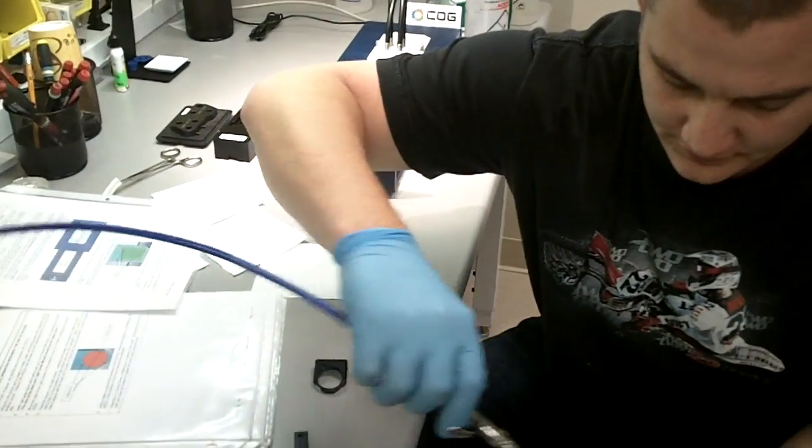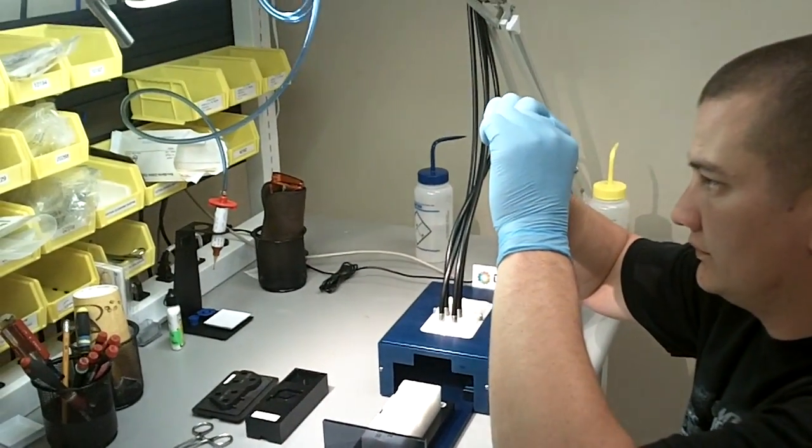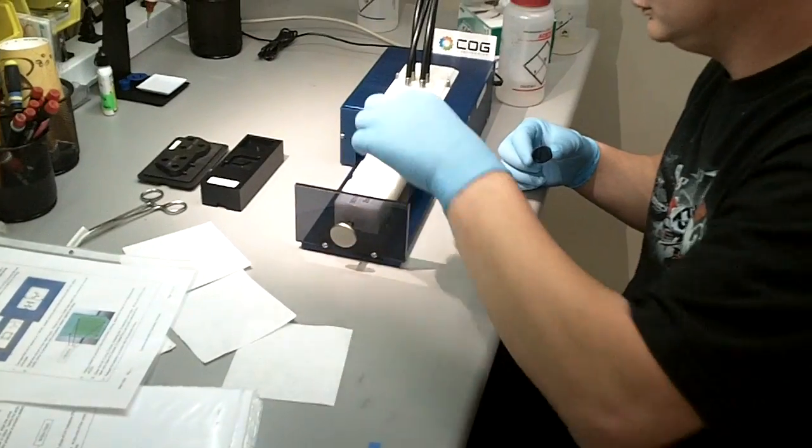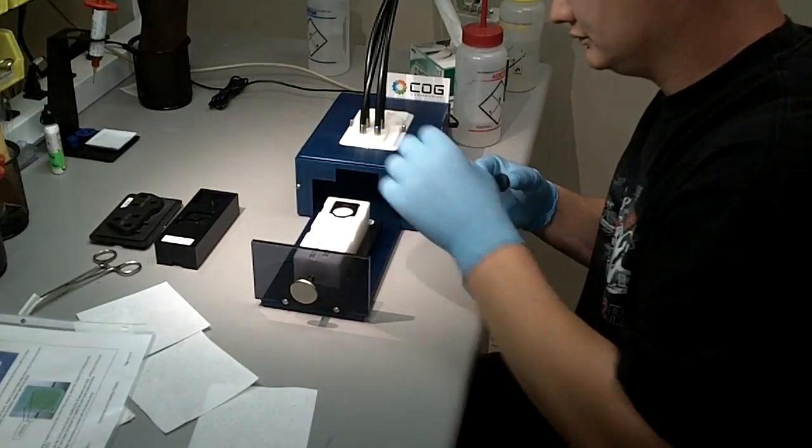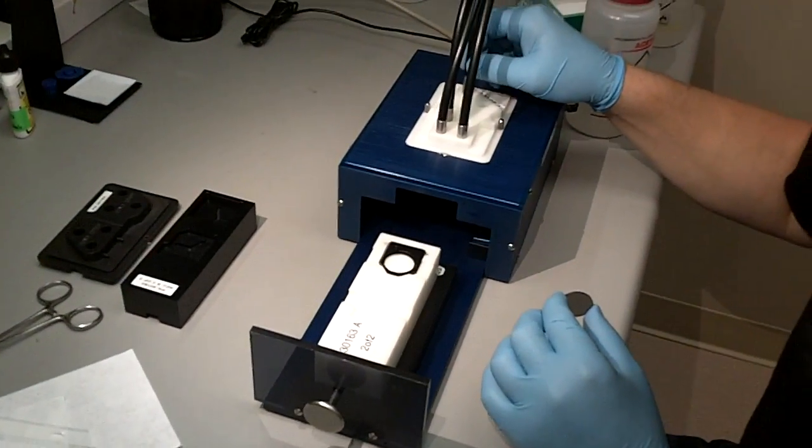So this is UV bonding of an optical assembly. We've cleaned the optical component, the window in this case, a polarizing window. And we have an aluminum mount.